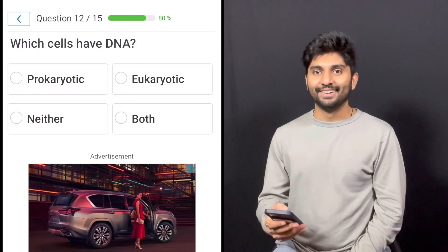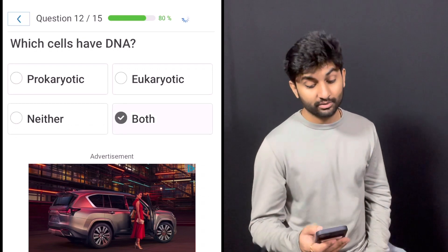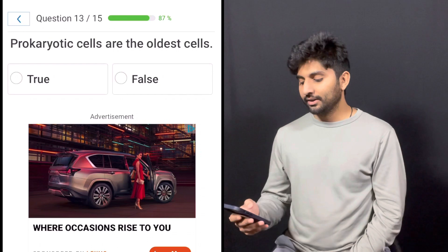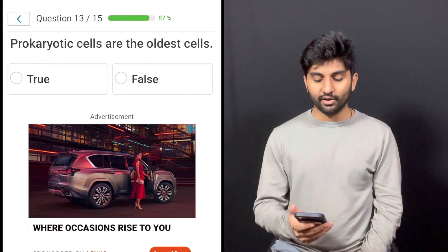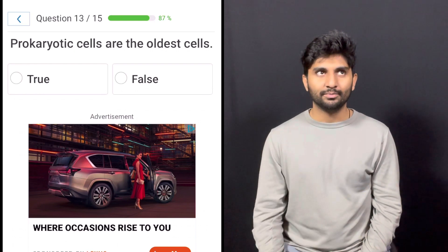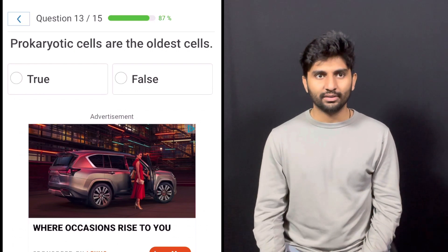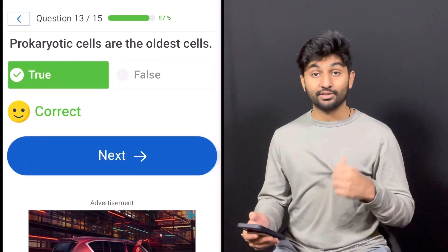Question 12. Which cells have DNA? Prokaryotic, eukaryotic, neither, both? It's both. Question number 13. Prokaryotic cells are the oldest cells. Prokaryotic cells—yes. They gotta be. Because eukaryotic cells came after, so true. That's correct.